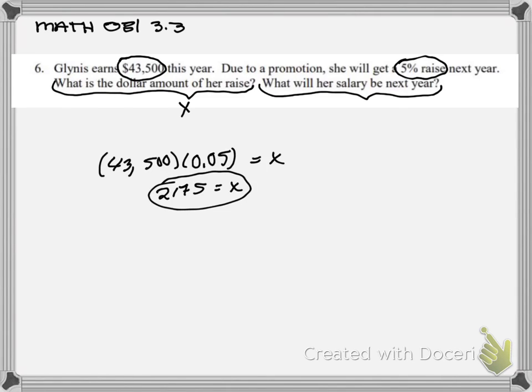But what about her salary? Is she just going to make $2,000 next year? Absolutely not. She's going to be making her original salary, $43,500, plus an additional $2,175. So we type that into our calculators and we find out that her new salary is $45,675.